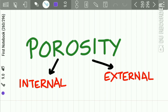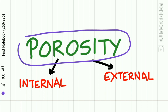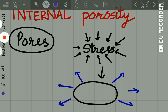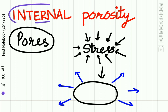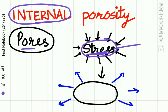An important concept frequently asked in exams is porosity. Porosity is of two types: internal porosity and external porosity. Internal porosity, as the name indicates, is present in the internal parts of the denture. These are pores or blebs that weaken the denture. Pores are areas of stress concentration — when stress is released, an empty pore forms, which is called internal porosity. This internal porosity is mainly present in the thicker portions of the denture.